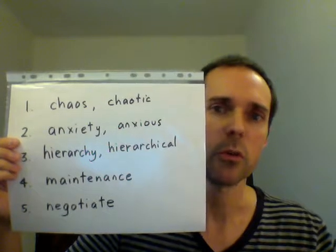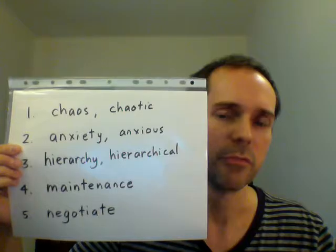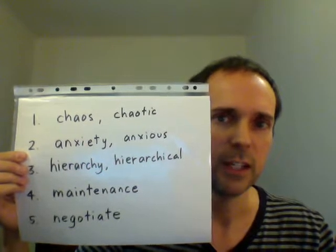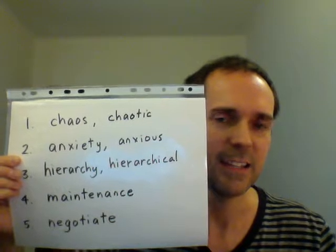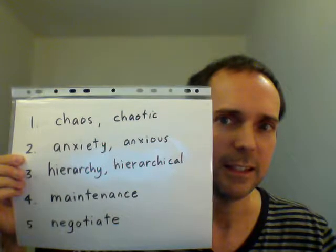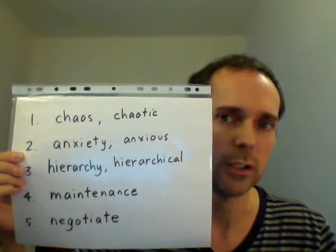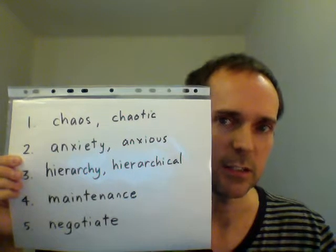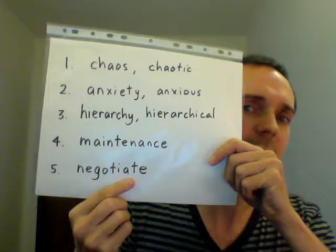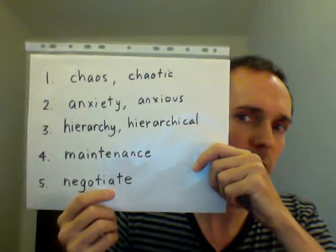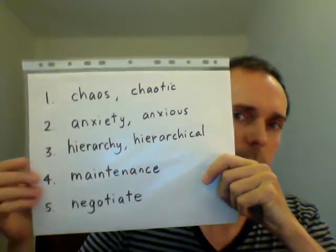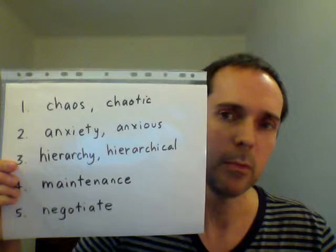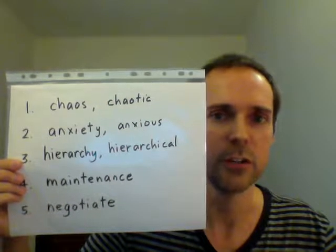This final word is usually pronounced with four syllables, ending in the two syllables 'e' and 'ate'. E-ate. The whole word is negotiate. Negotiate. Avoid combining these last two vowels into a diphthong. If you say it with four syllables, it probably will be easier for the listener to understand.